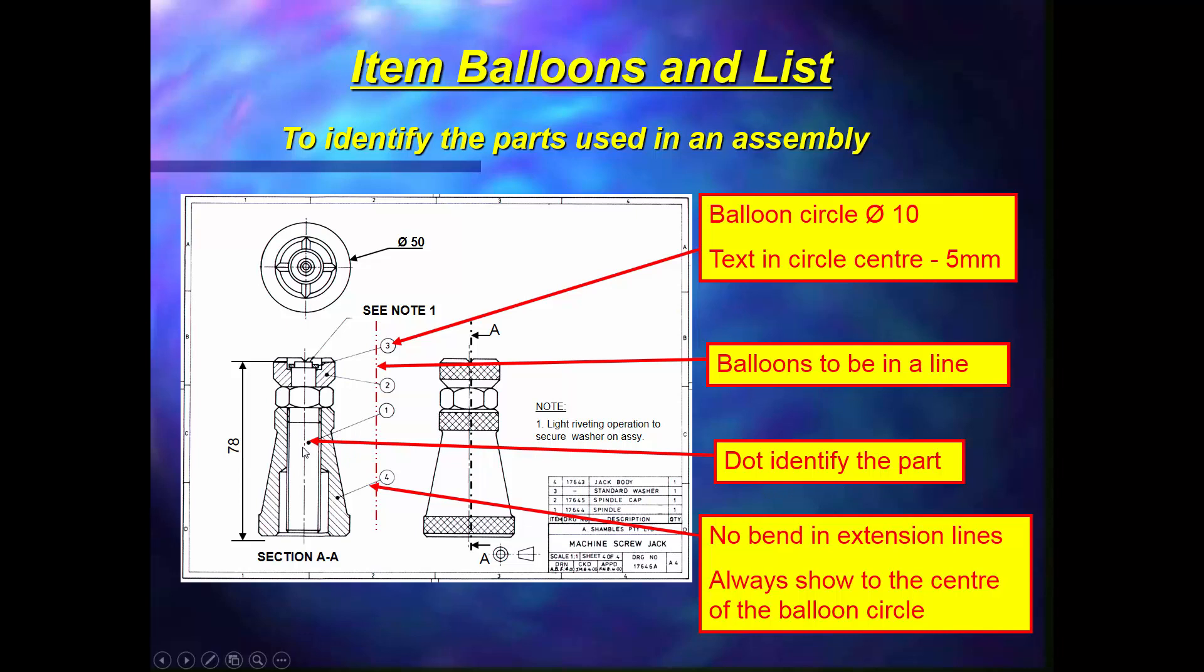Where a balloon is shown into a part, we'll use a dot. Where it's shown on the outside of a part, we'll use the arrowhead.